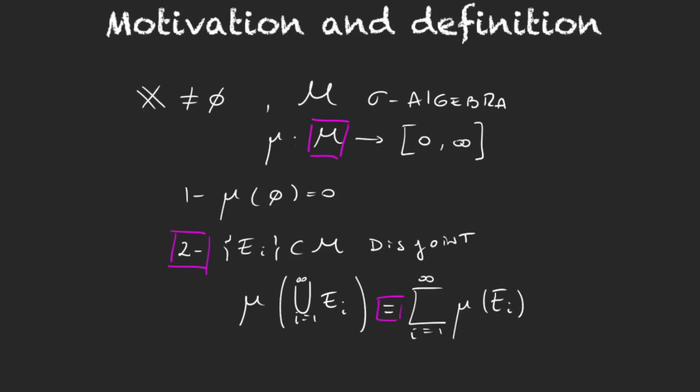So we ask ourselves, okay, I won't be able to find the measure because it's just too complicated. Can I approximate a measure? Can I get something similar to a measure and from this object finally get a measure? This is the objective of outer measures, and we've actually used outer measures before.